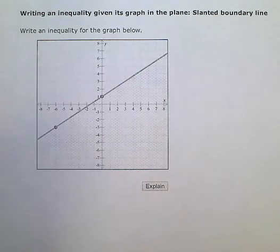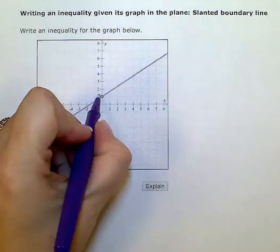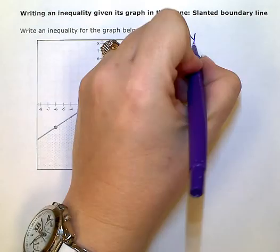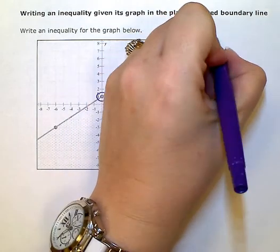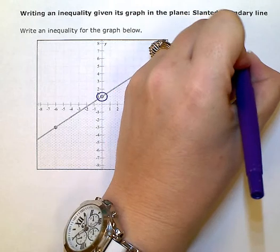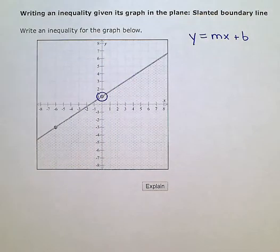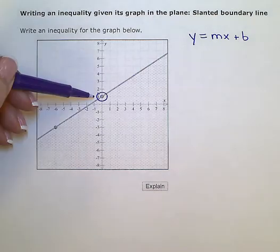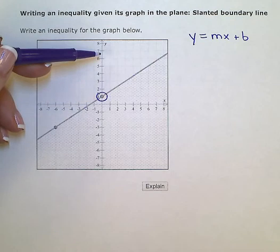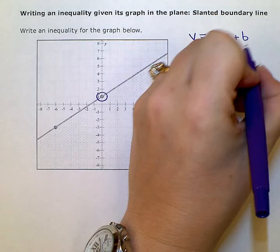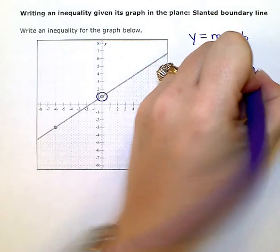So I'm going to first look at my y-intercept, which is positive 1. I'm going to write the equation for that boundary line in slope-intercept form, or y equals mx plus b form. So I know the y-intercept, that positive 1 right there, or the point where we cross the y-axis, that is my b value. So I'm going to have a positive 1 right there.